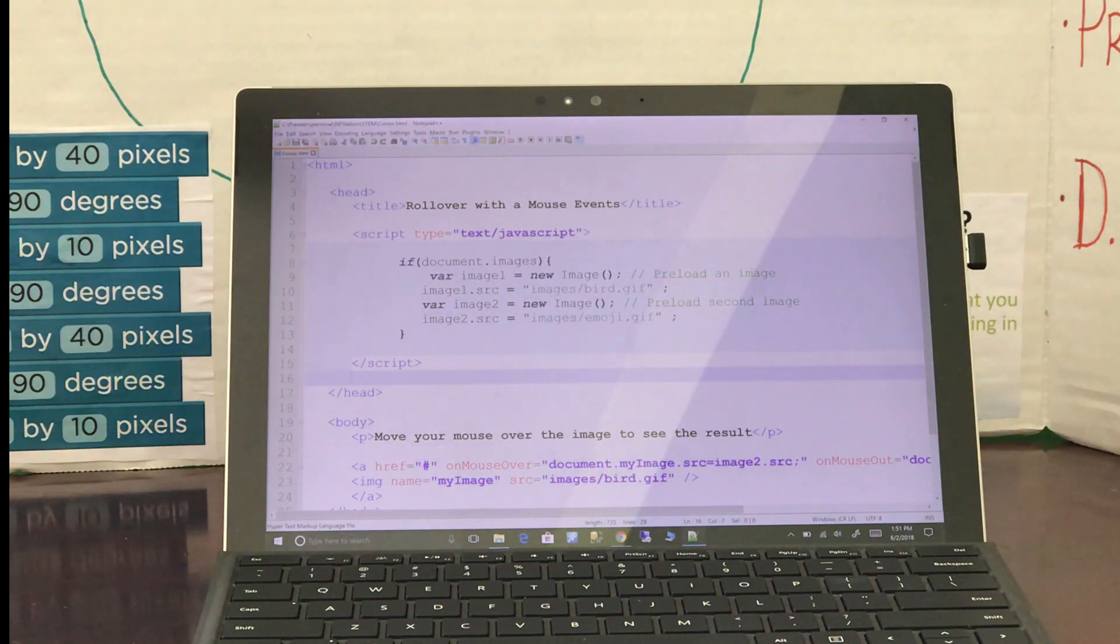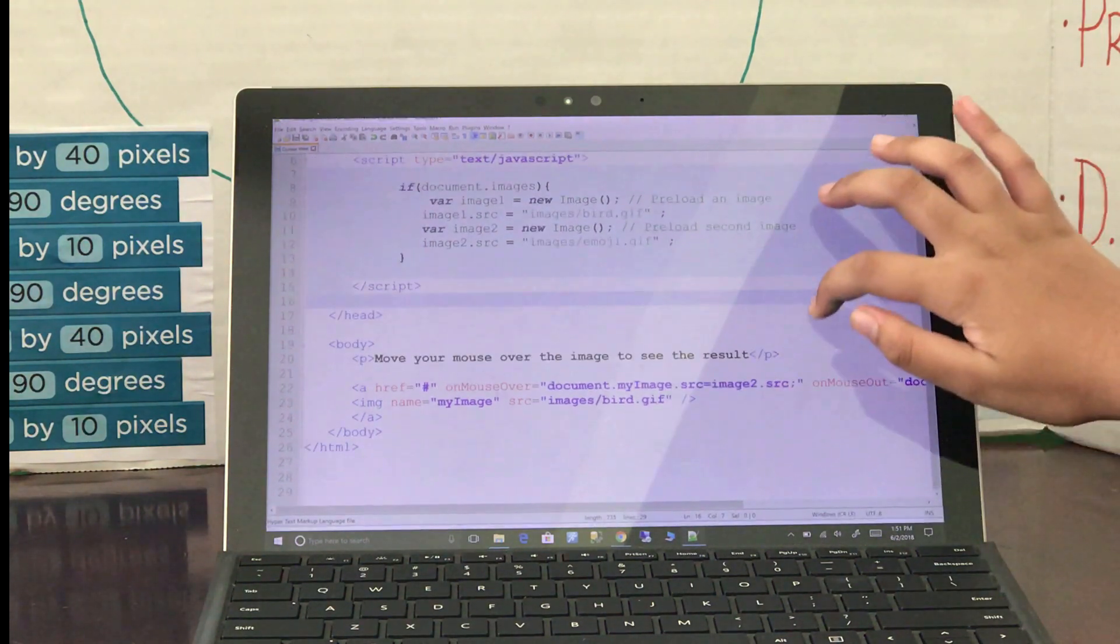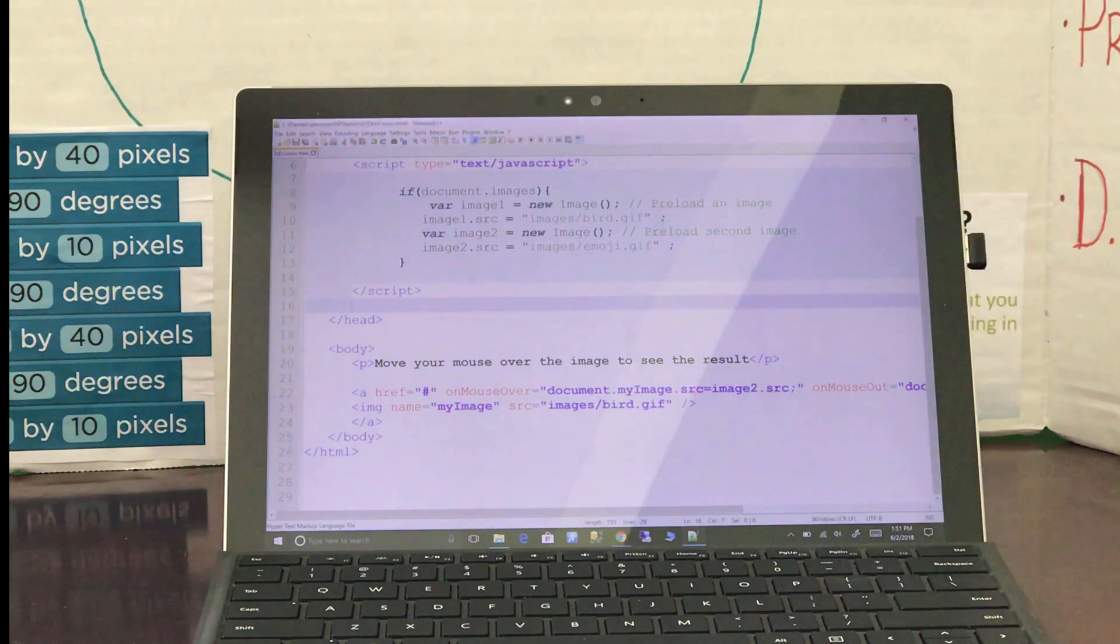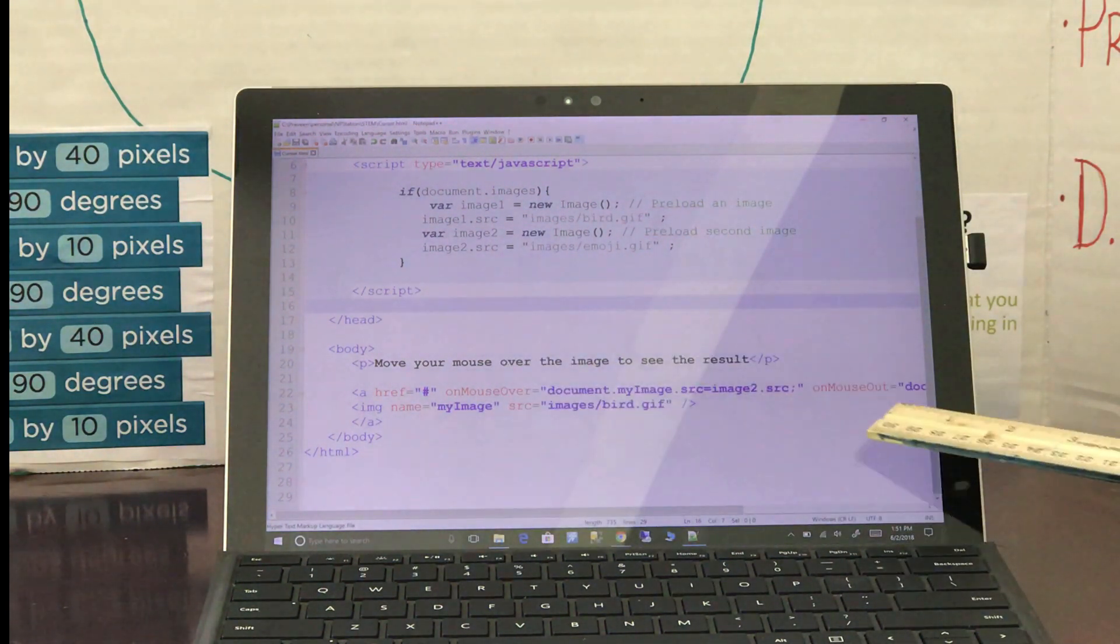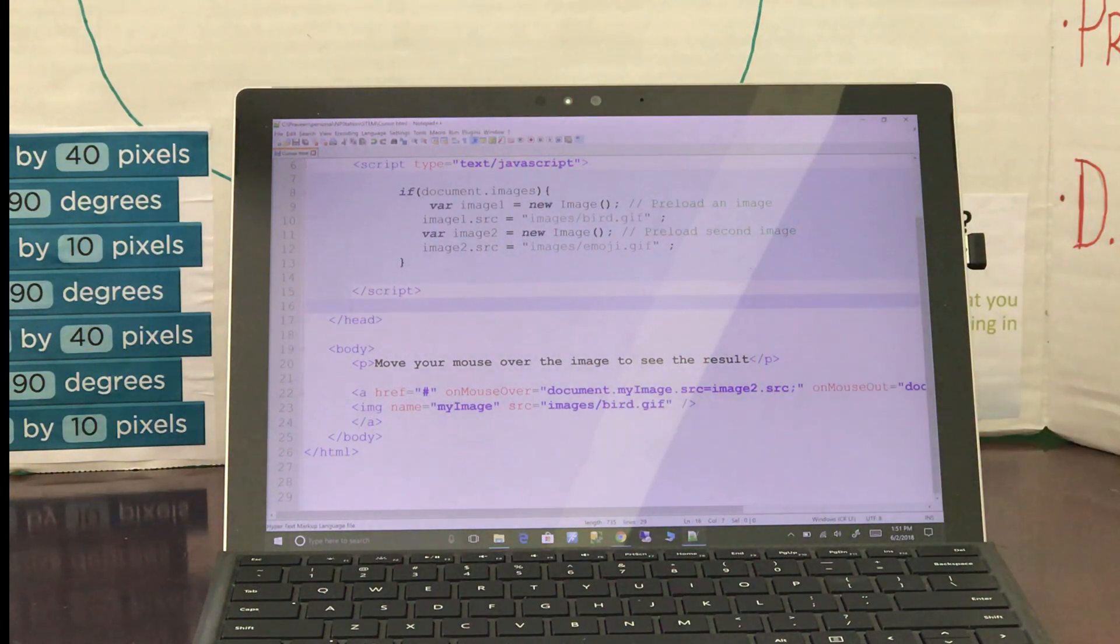This is the end of the head section. Next we have the main body of the program. The first line of the body is the title displayed when you open this project in the browser. Next we have two events called on mouse over and on mouse out.